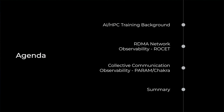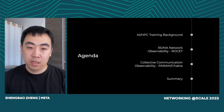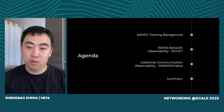In today's talk, I will first talk about the background of the AI HPC training stack. Next, I will show our efforts on providing network observability from two aspects: building Rocket to provide observability over RDMA network, and using Param Benchmark and Chakra ecosystem to understand collective communication behaviors. At the end, I will summarize today's talk with three takeaways.